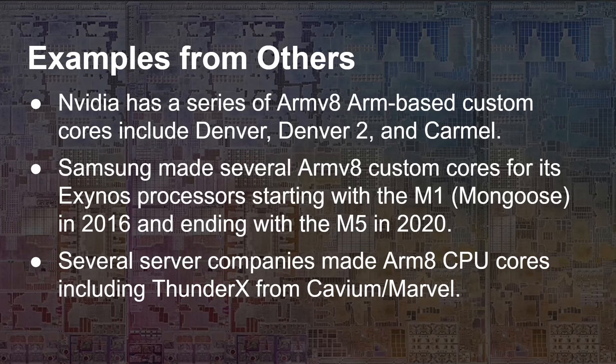Samsung made several ARMv8 custom cores for its Exynos processors, starting with the M1 — M standing for Mongoose — in 2016, ending in 2020. They shipped five generations of this chip in actual customer smartphones, but Samsung ultimately decided it wasn't getting a competitive edge relative to the investment in time and money, so it discontinued the program. There are also several server companies that have made custom ARMv8 CPU cores, including the ThunderX core from Cavium — later Marvell. There's a rich history of custom cores.